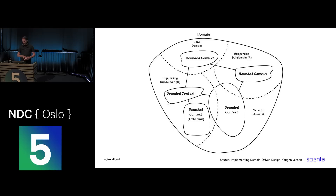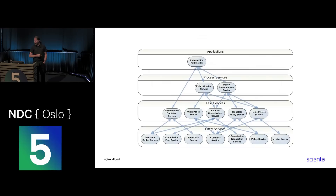In this example, he's taken care to create bounded contexts within the core and supporting domains — that's where you use the effort. I can also mention that when microservices broke, a lot of the DDD people were saying 'at last we have some enforcement for those boundaries, the bounded contexts' — at last some physical boundaries.